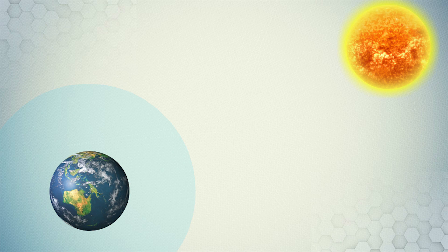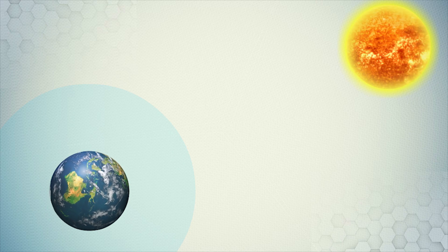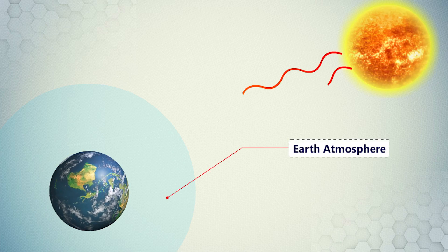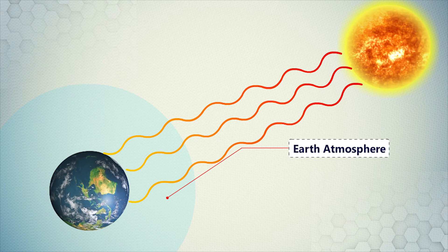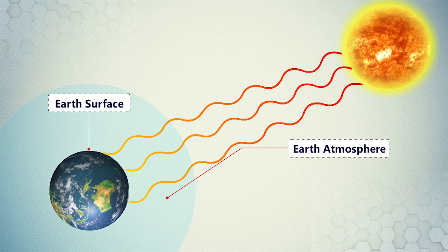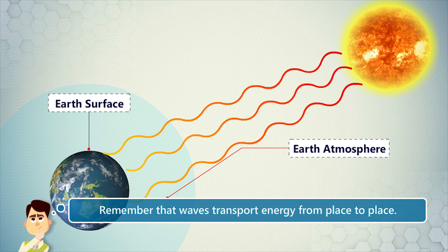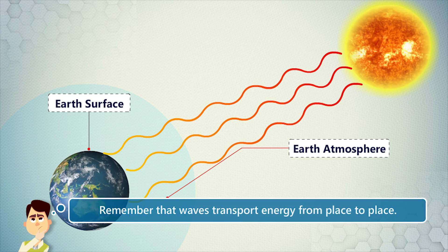Different materials can block different types of light. More specifically, the Earth's atmosphere only allows certain wavelengths of light to penetrate to the surface. Remember that waves transport energy from place to place.